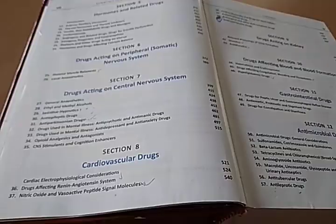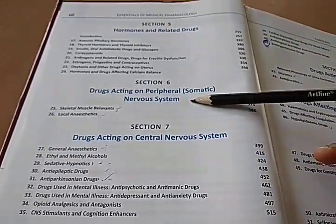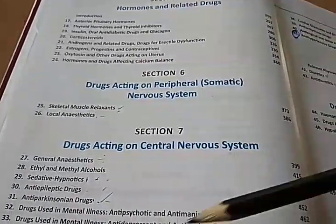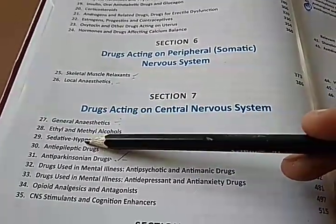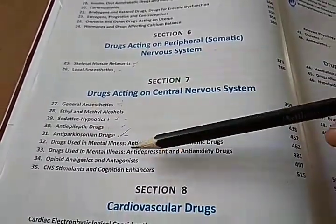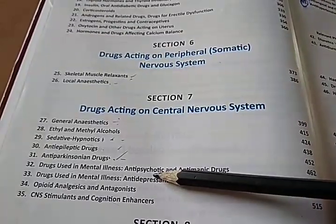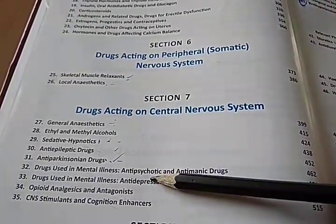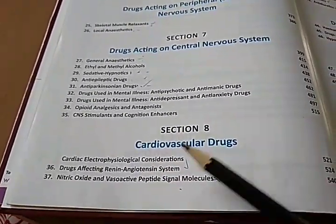There are a lot of drugs. Nervous system drugs: on the peripheral nervous system you can give skeletal muscle relaxants and local anesthetics. For the central nervous system, you have general anesthetics, anti-epileptic, anti-Parkinson, anti-psychotic, and antidepressant drugs. For antidepressants, you have serotonin — selective serotonin reuptake inhibitors — which can control your depression.